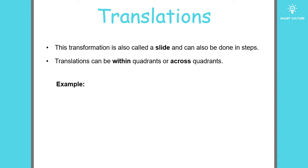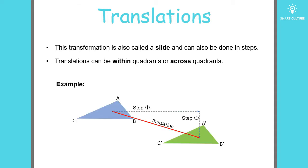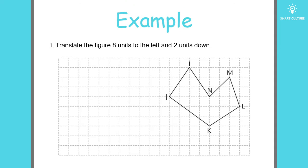Let's take a look at this example. The blue triangle is the original triangle and the green triangle is the image of the blue triangle, so the green triangle has been translated. Now let's look at another example: translate the figure eight units to the left and two units down.